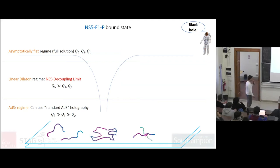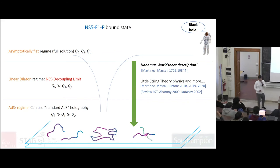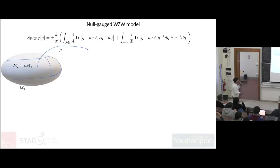What I'm trying to tell you is that we have a worldsheet string model, thanks to the work of Martinec and Massai, that actually captures not only the AdS3 × S3 region but also the full linear dilaton regime, which is supposed to be due to this mysterious little string theory that would be interesting to exploit further.